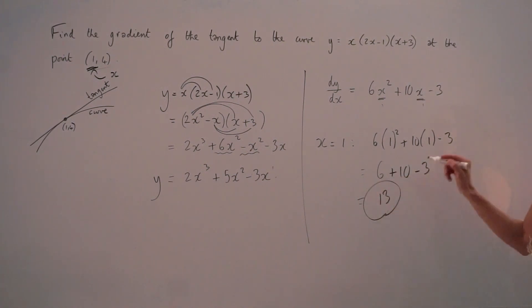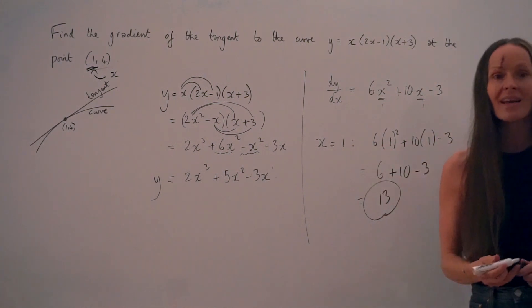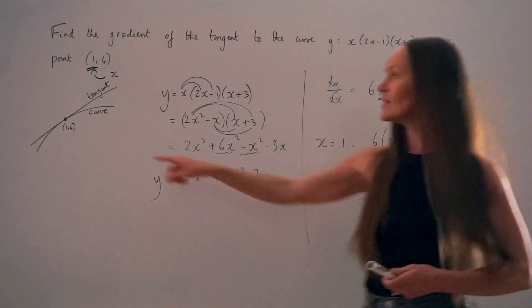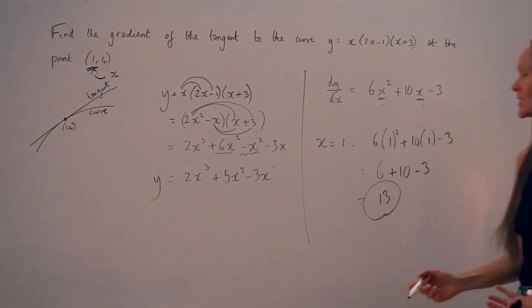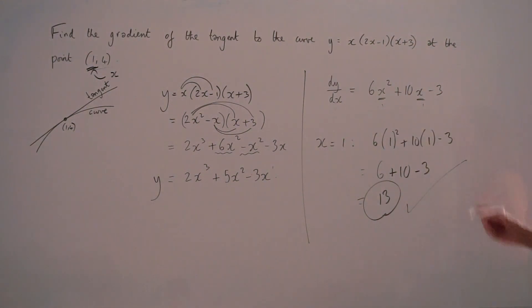So this is the gradient of the curve when x is equal to positive 1. And remember what I said at the beginning? The curve and the tangent have the same gradient at this point. So the gradient of the tangent is also positive 13.